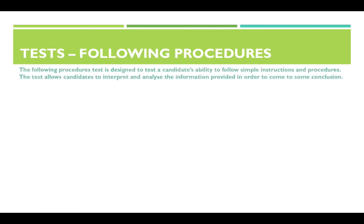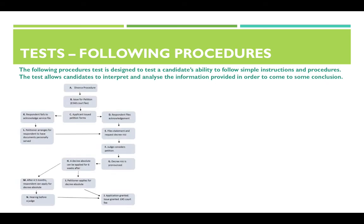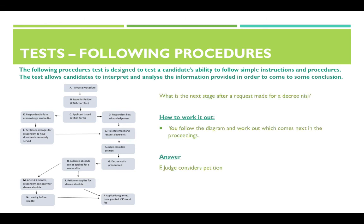Finally, following procedures: this test is designed to assess a candidate's ability to follow simple instructions and procedures, interpreting and analysing information to reach a conclusion. Here we have a procedures diagram. The question is: what is the next stage after a request is made for a decree at NICI? Locate 'decree at NICI' — that is step G in the procedures. The step that comes before it is F: 'Judge Considers Petition.' That is your answer.